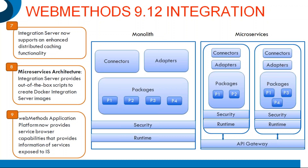Integration Server now supports out-of-the-box scripts to create Docker Integration Server images. This is the feature I like most — support for microservices architecture. You now have greater flexibility from an architecture perspective, whether you want to use Integration Server in a monolith architecture or microservices architecture — it's now your choice. You can ensure high availability of specific functionality by deploying high in-demand services in small containers as microservices and let API Gateway take care of orchestration.